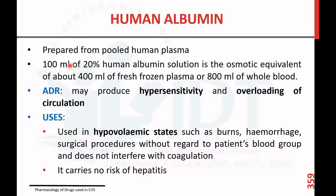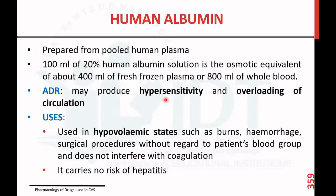Human albumin is usually prepared from pooled human plasma. 100 ml of 20% human albumin solution is osmotically equivalent to about 400 ml of fresh frozen plasma or 800 ml of whole blood. There are some adverse reactions — it may produce hypersensitivity and overloading of circulation.